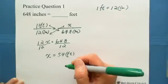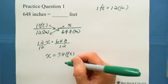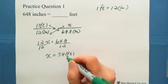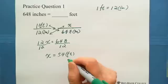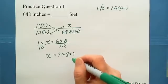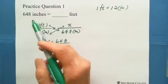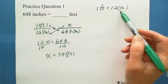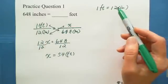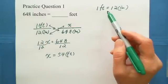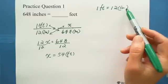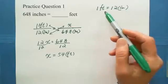And after you got the answer, you can think about is your answer reasonable? Because 1 foot equals 12 inches. Now if it's 648 inches, it must be greater than 1 foot. So that's the number, must be greater than 1 foot.